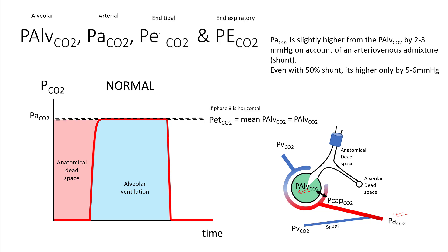The other two terms are P small e CO2 and P capital E CO2. The small e CO2 stands for end tidal CO2 — that means the highest amount of CO2 measured on the capnogram at end expiration. P capital E CO2 is the end expiratory CO2, which is the average CO2 in the exhaled air. For simplicity, we'll call our end tidal CO2 as PetCO2.